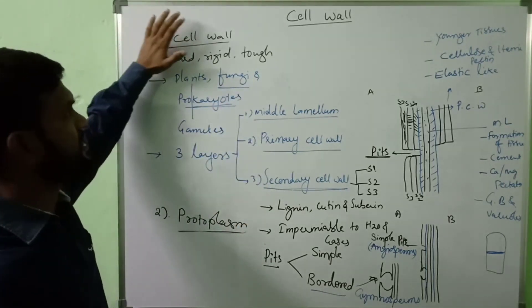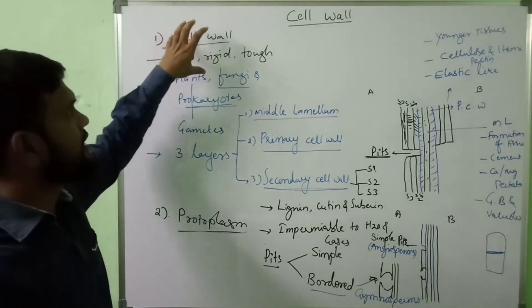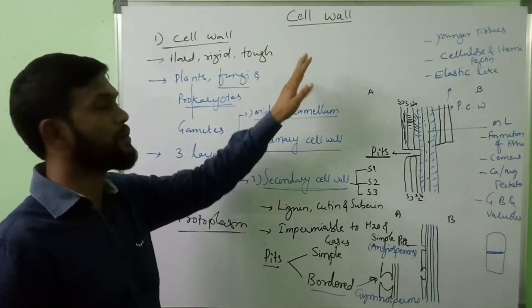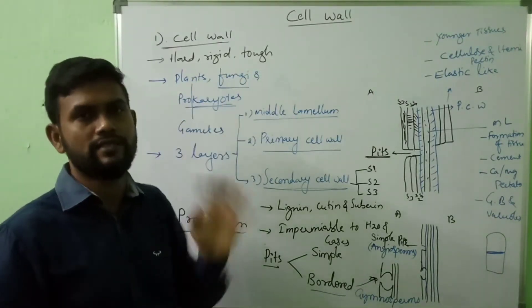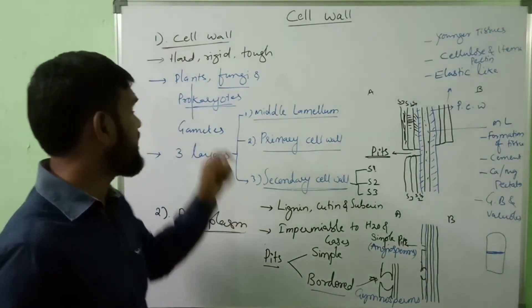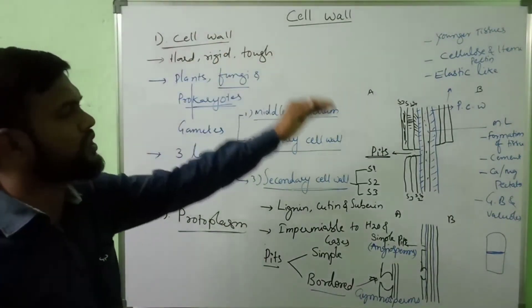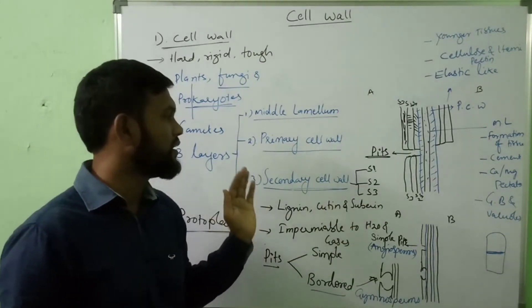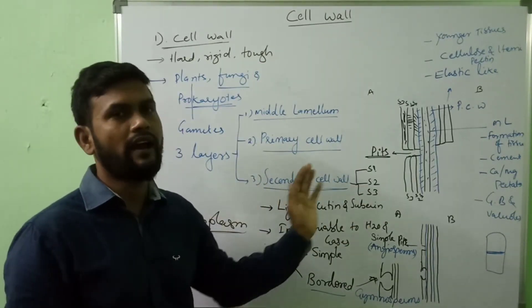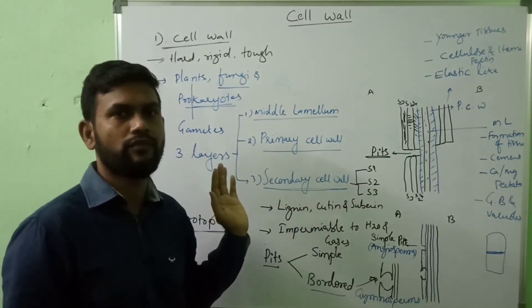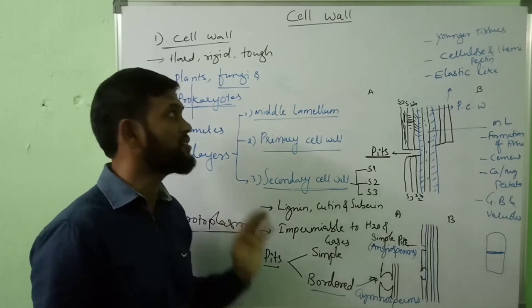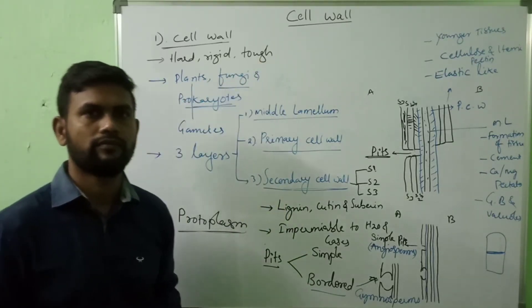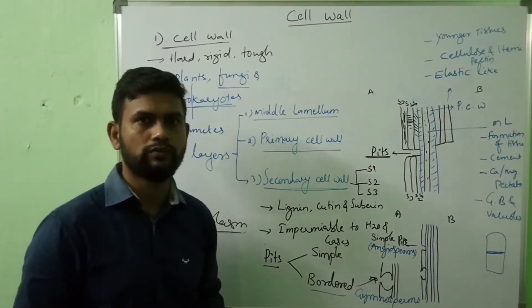The main functions of the cell wall are: it gives a particular shape to the cell, and it provides protection to the inner parts of the cell. This is about cell wall structure. Thank you.